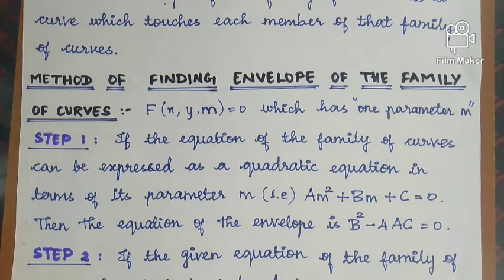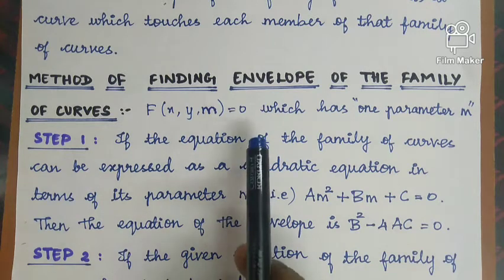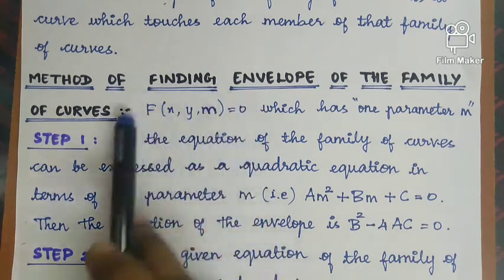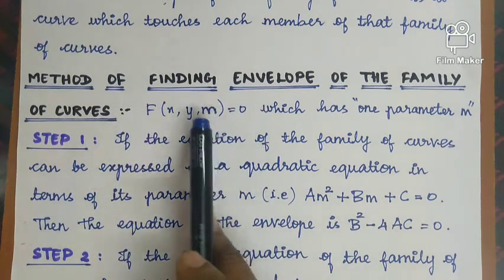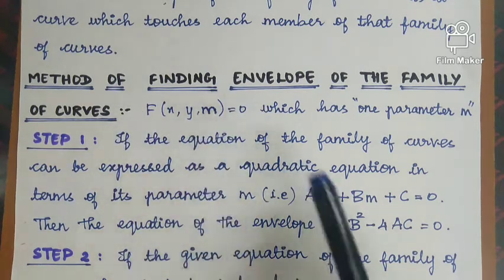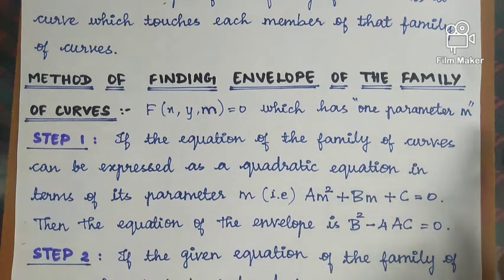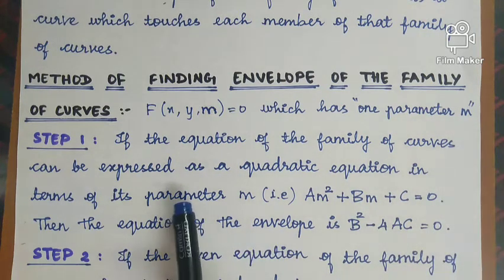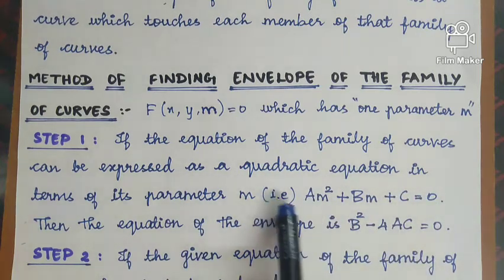Then the equation of the envelope is b² − 4ac = 0. If the equation of the family of curves can be expressed as a quadratic equation am² + bm + c, we apply this formula.